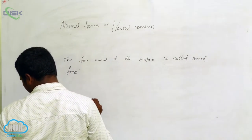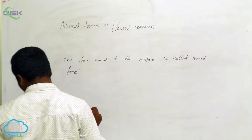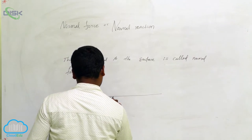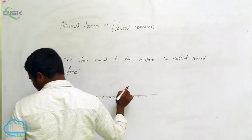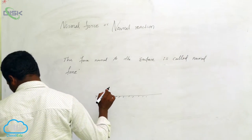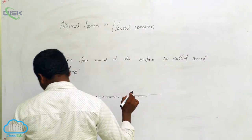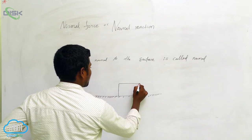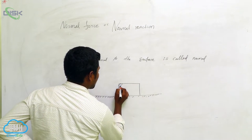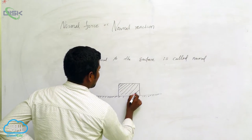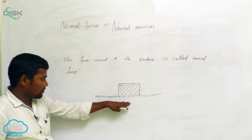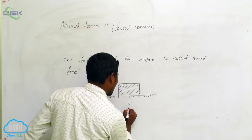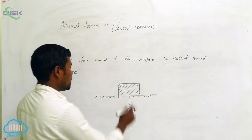I am considering an object on a horizontal surface. This is the horizontal surface, and on the horizontal surface one body is there. Downwards, the gravitational force mg is acting on this surface.